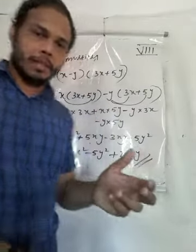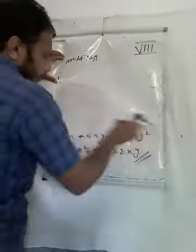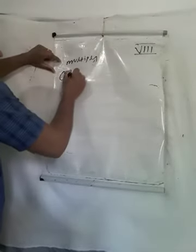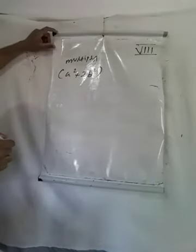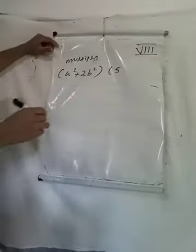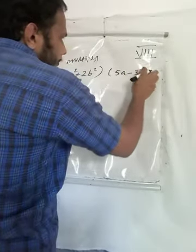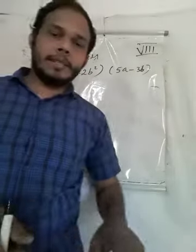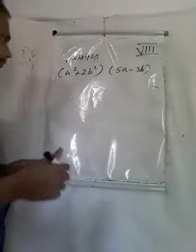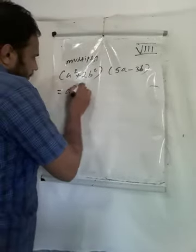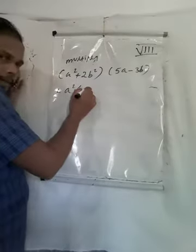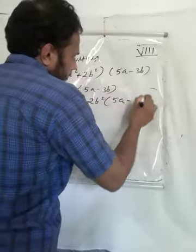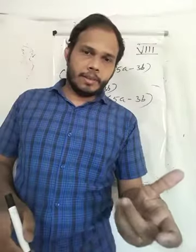Now we can discuss another problem using the same concept: (a squared plus 2b squared) multiplied by (5a minus 3b). Same concept — a squared into (5a minus 3b), plus 2b squared into (5a minus 3b).